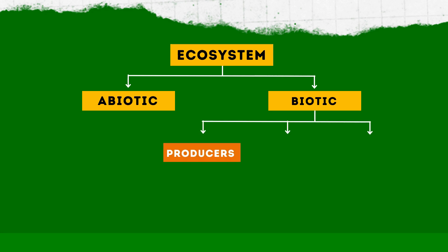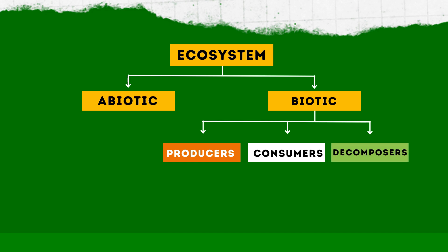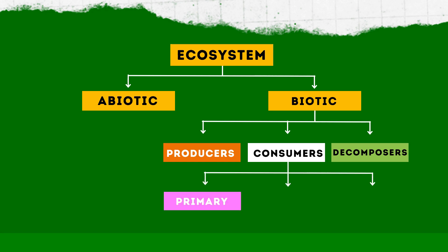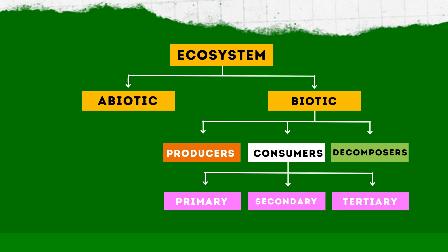The biotic component has generally three levels. First, producers — these are living organisms that can make food for others, producing food for other organisms. Then we have consumers — living beings which consume the food made by the producers. Finally, we have decomposers, which decay and decompose organic waste material. Consumers can be primary consumers, which directly feed upon producers; secondary consumers, which eat the primary consumers; and tertiary consumers, which eat the secondary consumers.